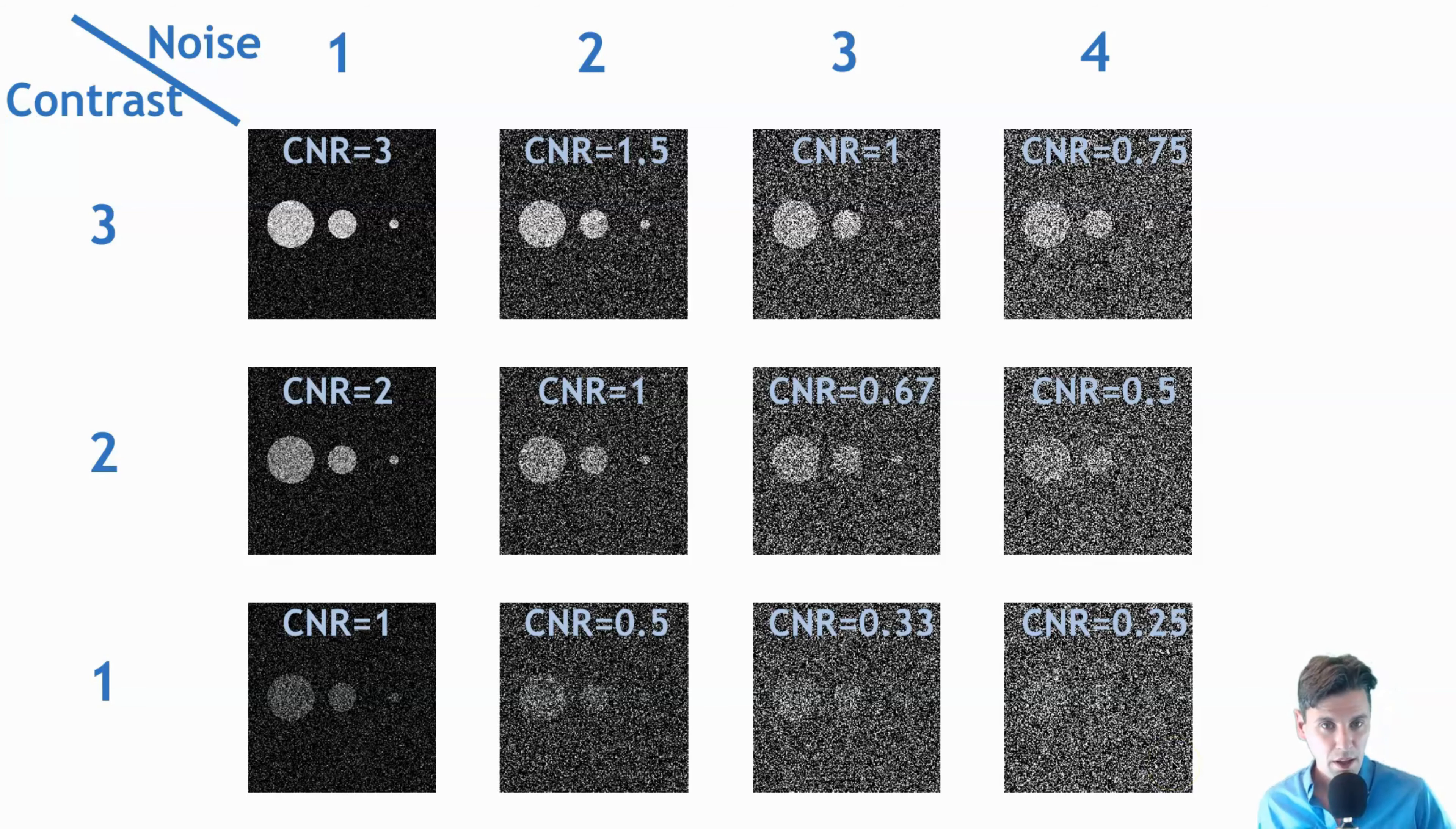So what we learned just from this simple kind of tutorial of looking and empirically looking at these images, we learned that somehow there's a relationship between the contrast in our ability to visualize the object. And somehow there's also a relationship between the size of the object.